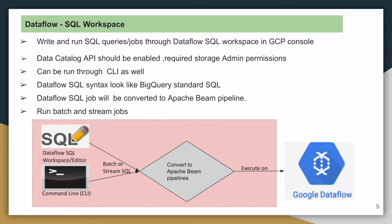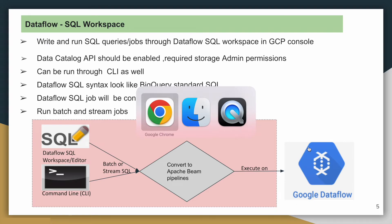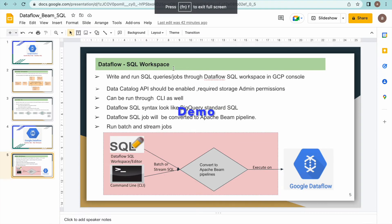Once you submit this job, either through the Google Cloud console page or CLI, it will internally be converted to an Apache Beam pipeline and then executed on Dataflow. We can run both batch and streaming jobs. As shown in the diagram, you can submit the job via the SQL interface or editor and also the command-line interface, and it gets converted to an Apache Beam pipeline executed on Google Cloud Dataflow.